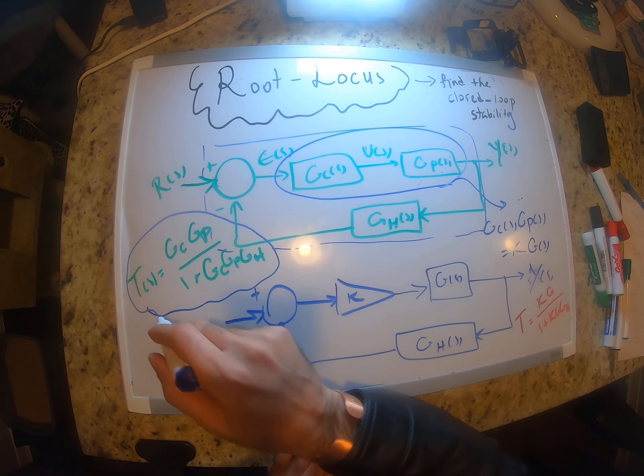The whole point of Root Locus is to see how changing this scalar K would change the location of poles of the closed-loop system — how changing K would make the system stable or unstable, and how the poles of the closed-loop system move as K changes. Root Locus is all about how K impacts the position of the closed-loop poles.